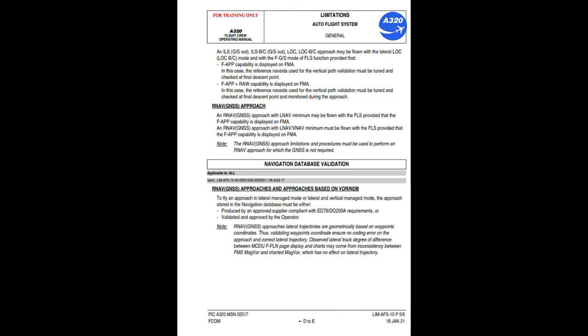If FAB+RAW capability is displayed on FMA, the reference navaid and the corresponding airborne radio equipment must be serviceable, tuned, and monitored during the approach. An ILS GS out, ILS BC GS out, or LOC B/C approach may be flown with the lateral LOC/LOC B/C mode and with the FGS/FLS function, provided that FAB capability is displayed on FMA; in this case the reference navaid used for the vertical path validation must be tuned and checked at final descent point. If FAB+RAW capability is displayed, the reference navaid used for vertical path validation must be tuned and checked at final descent point and monitored during the approach. RNAV GNSS approach with LPV minima may be flown with the FLS provided FAB capability is displayed on FMA. RNAV GNSS approach with LNAV/VNAV minima must be flown with the FLS provided FAB capability is displayed on FMA.